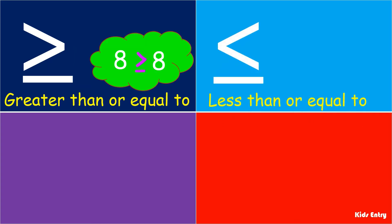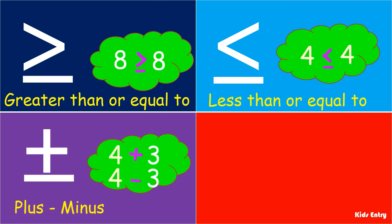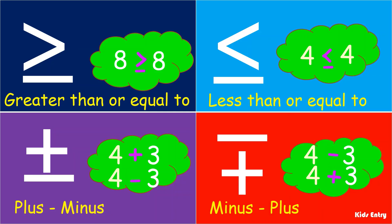Less than or equal to sign — this sign is used to compare and show the lesser valued number or equal number. Plus-minus sign — this sign indicates that both plus and minus operations can happen on the numbers. Minus-plus sign — this sign similarly indicates that both minus and plus operations happen on the numbers.